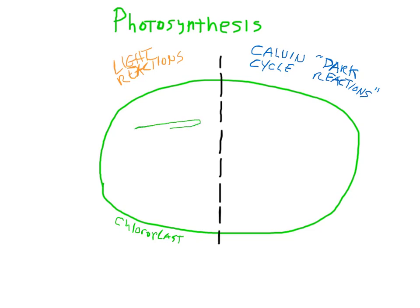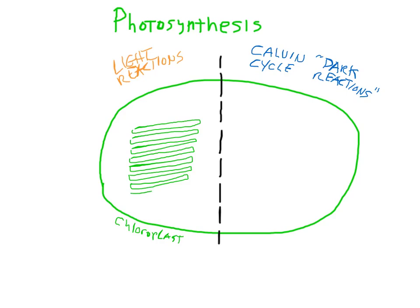The thylakoid membranes exist inside the chloroplast. These are thin lipid membrane sacs where the chemical reactions of the light reaction take place. The reason they are so thin is to increase the surface area to volume ratio for chemical reactions to happen. So these are called the thylakoid.